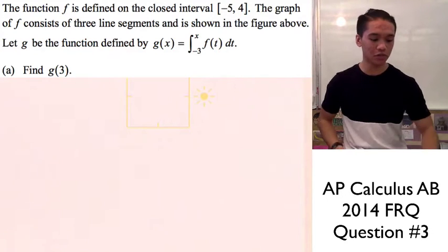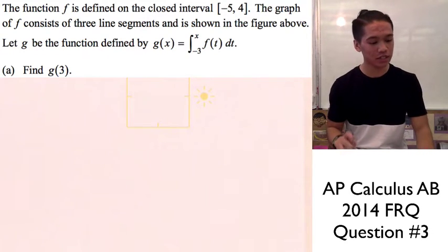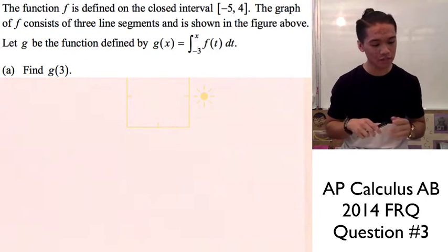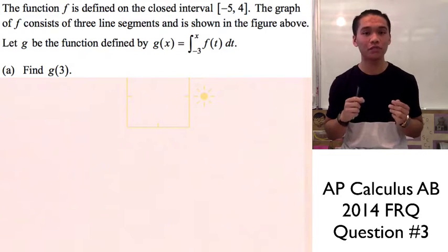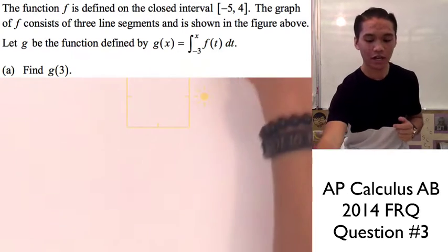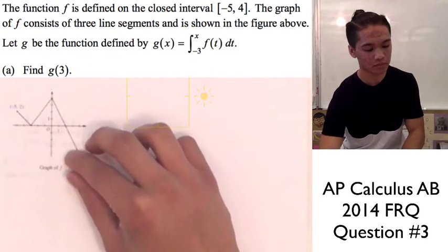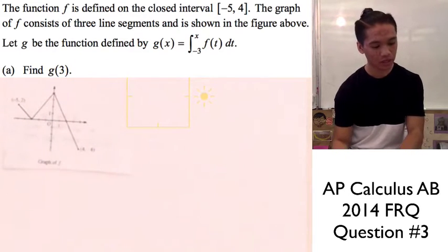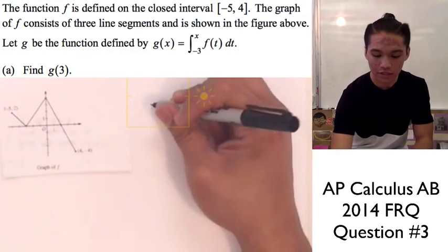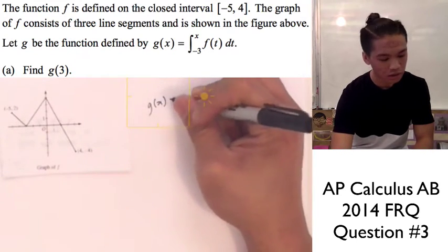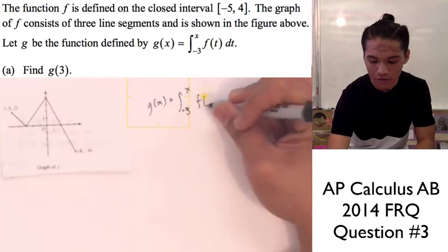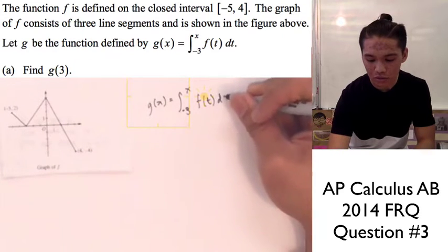Alright guys, let's go ahead and answer question 3 from the 2014 AP Calculus AB and BC test. The question says the function f is defined on the closed interval from negative 5 to 4, and the graph of f consists of three line segments, as shown here. We have to consider that g is defined by g of x equals the integral from negative 3 to x of f of t with respect to t.